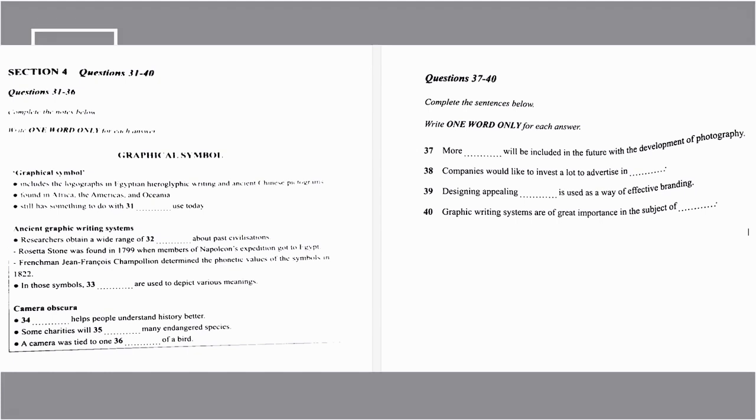Indeed, elements of pictography are still found in modern Chinese characters, and it is often an interesting exercise to trace the origins of some Chinese characters. Pictographs remain in common commercial use today as signs, instructions, or statistical diagrams. Road signs and public toilet signs, and even flat-pack assembly instructions utilising pictures, are considered pictographic. Ancient graphic writing systems provide researchers with a wealth of knowledge about past civilisations.